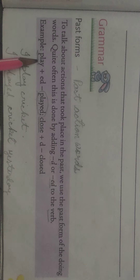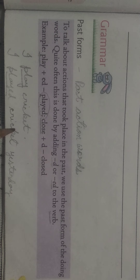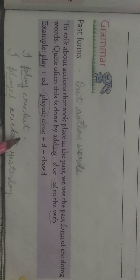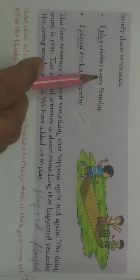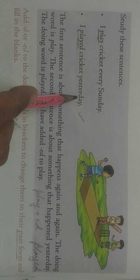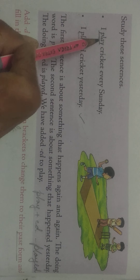For example: I play cricket — main cricket khelta hoon — this is simple present form. And: I played cricket yesterday — main kal cricket khel liya — means the action has already happened. We use past forms for actions that are already complete, that happened yesterday or some time ago. Study these sentences: 'I play cricket every Sunday' — this happens regularly. 'I played cricket yesterday' — this already happened. The doing word in the first sentence is play; in the second sentence the doing word is played.